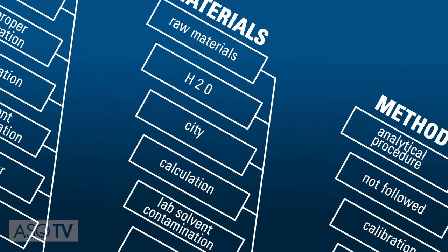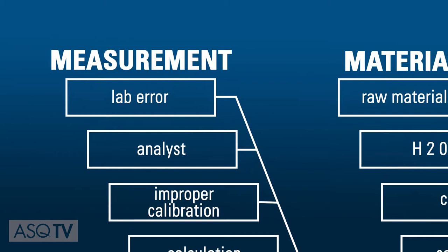Now brainstorm major factors contributing to the problem. These could be equipment, materials, environment, or manpower. Write the causes as branches from your center line.